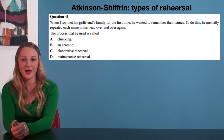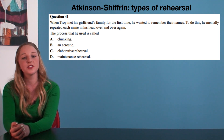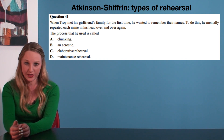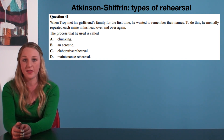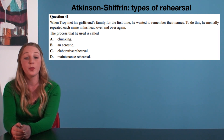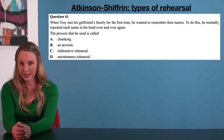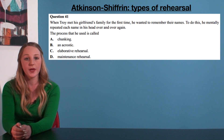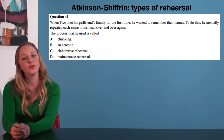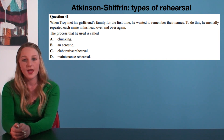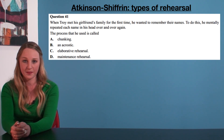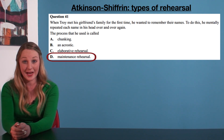What might VCE ask about all of this? Let's have a look — this is a question from the 2013 VCE exam. It reads: when Troy met his girlfriend's family for the first time, he wanted to remember their names. To do this, he mentally repeated each name in his head over and over again. The process that he used is called: A) chunking, B) an acrostic, C) elaborative rehearsal, or D) maintenance rehearsal. Troy repeated the names over and over again so that the information would be maintained in short-term memory. He didn't try to link the new information — his girlfriend's family's names — to existing information. Thus, the correct response is option D, maintenance rehearsal.